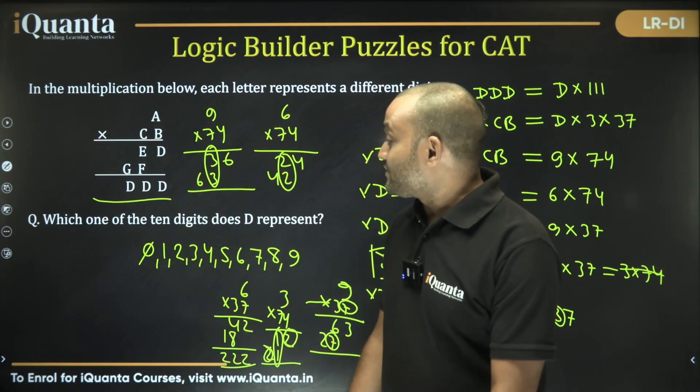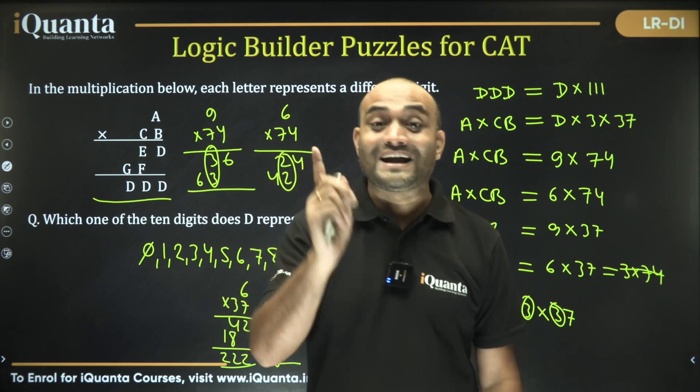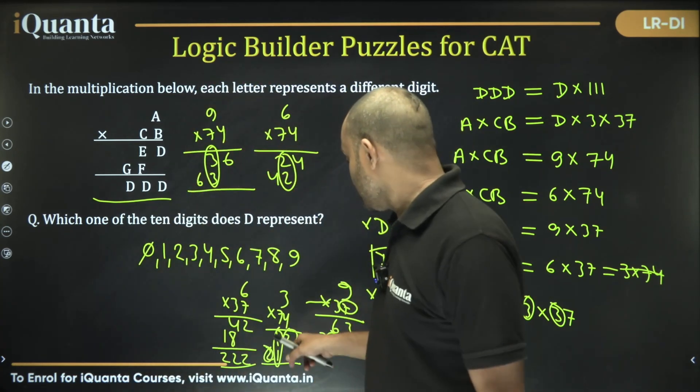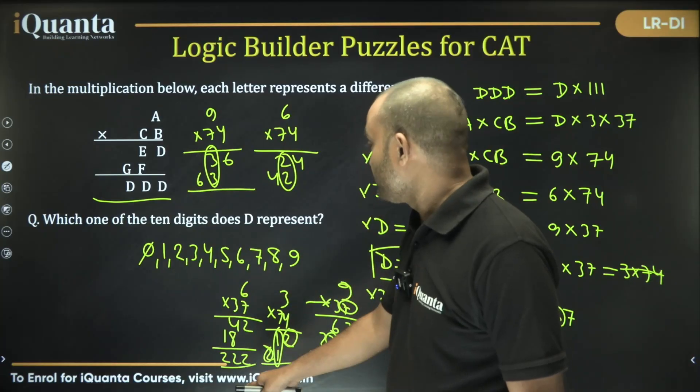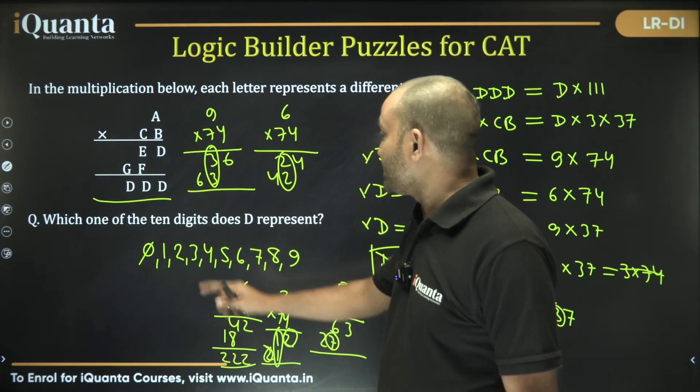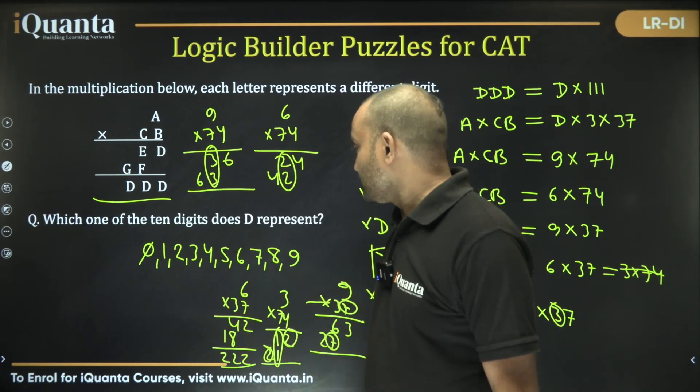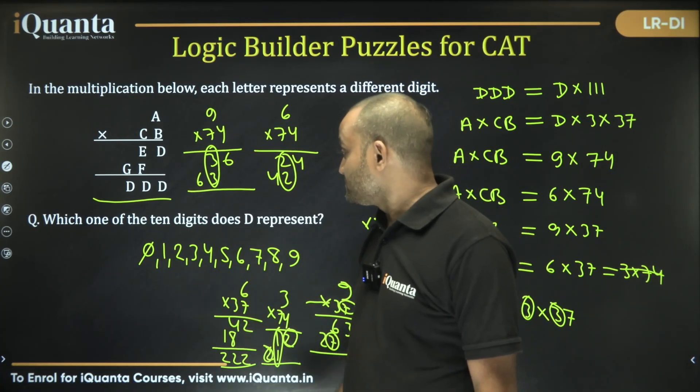So what is our answer? D is equal to 2, and in that case we are also able to find out rest of the digits. Using this one we can say A is equal to 6, C is equal to 3, B is equal to 7, E is equal to 4 and F is equal to 8, G is equal to 1.